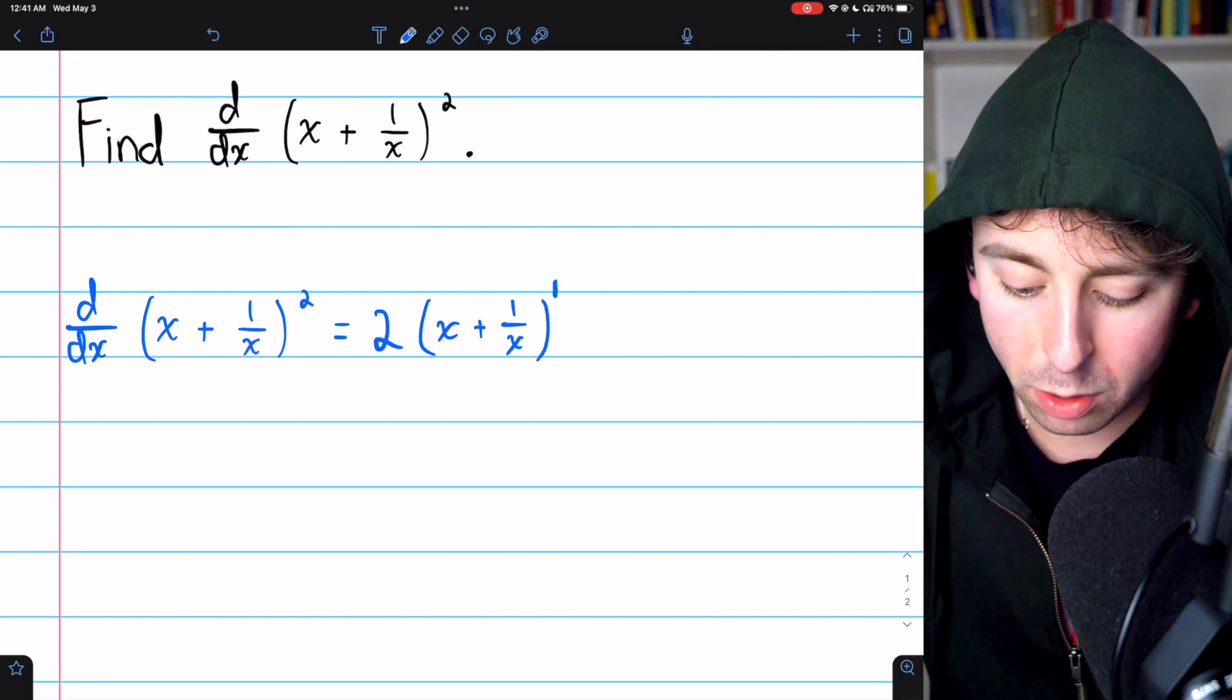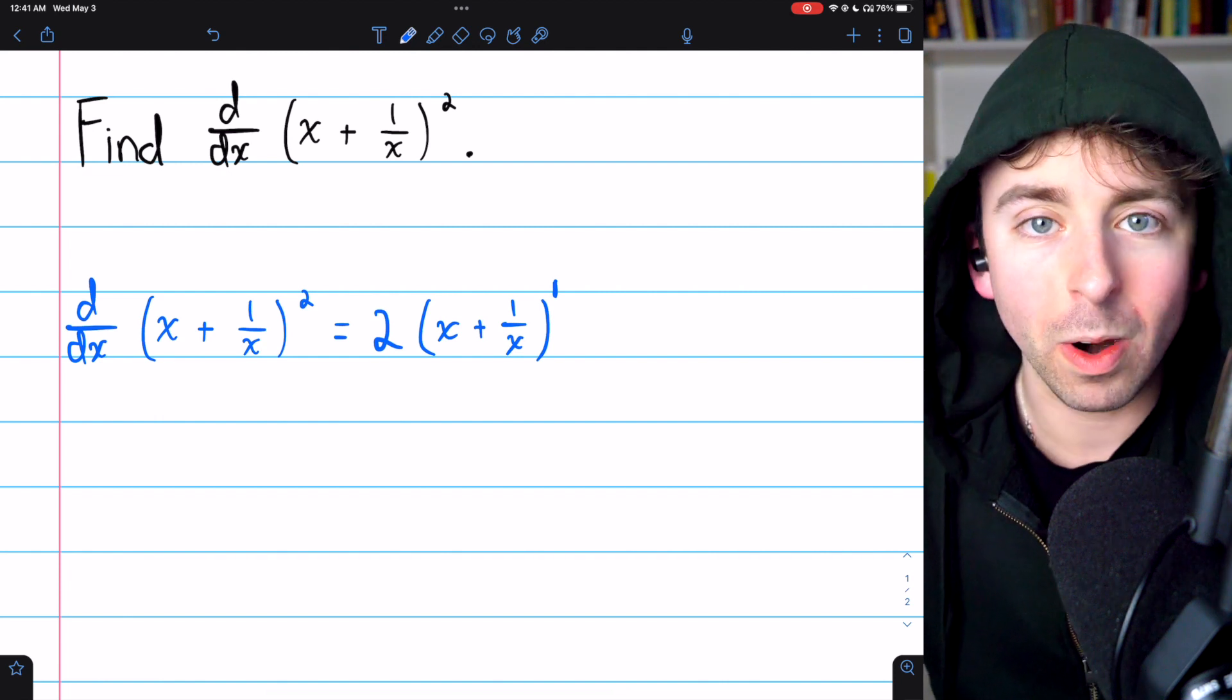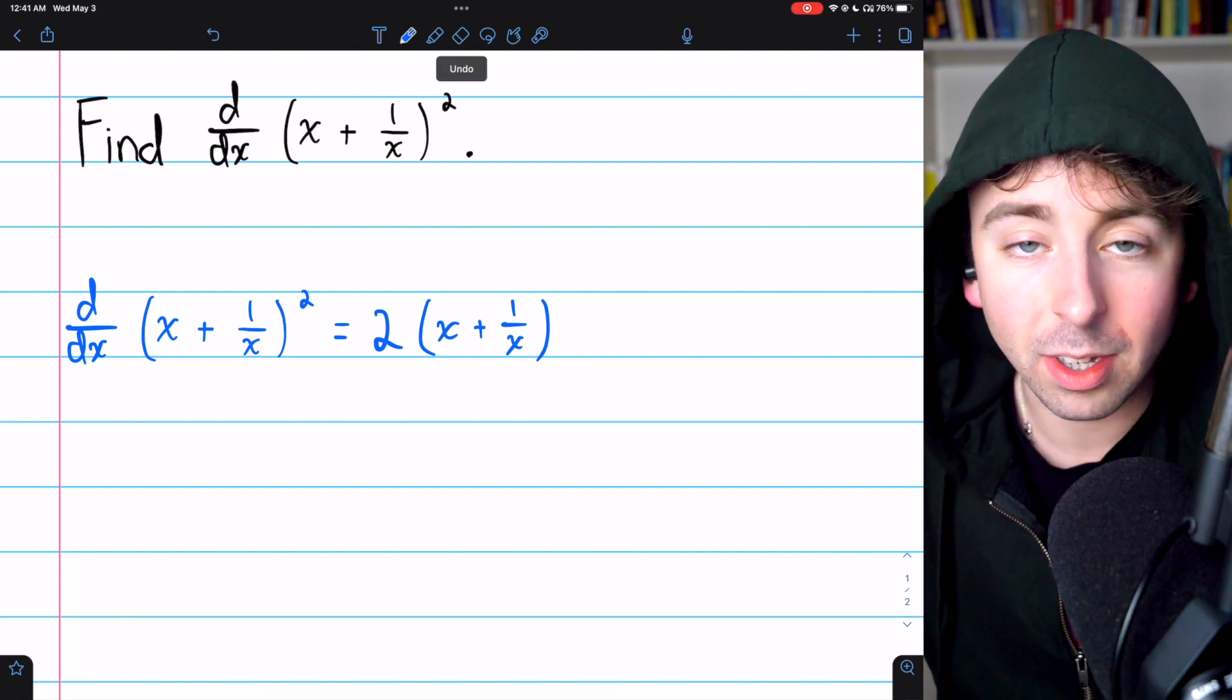The power of two gets reduced by one, so we'll just not write that power. This is the derivative of the outside function.